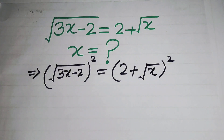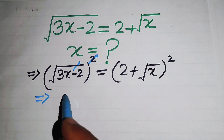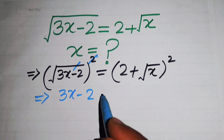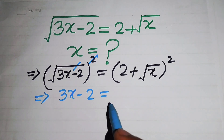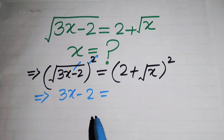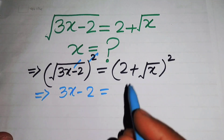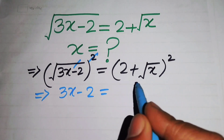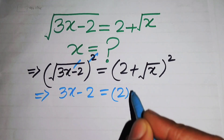On the left-hand side, the square and square root cancel each other, and we obtain 3x minus 2. On the right-hand side, we use the square identity to open the term, writing it as 2 squared plus the square root of x squared plus 2 times 2 into the square root of x.